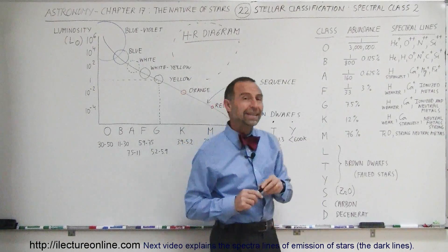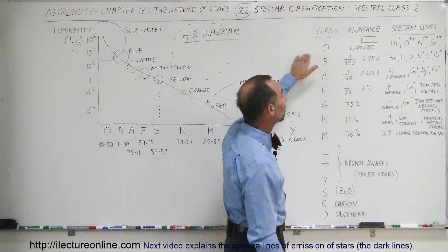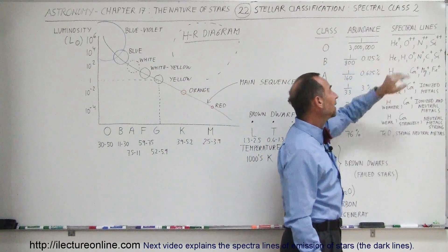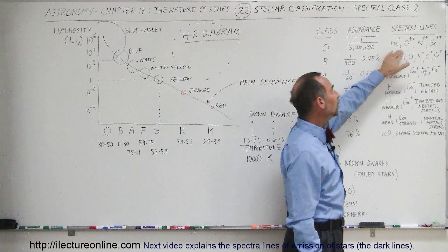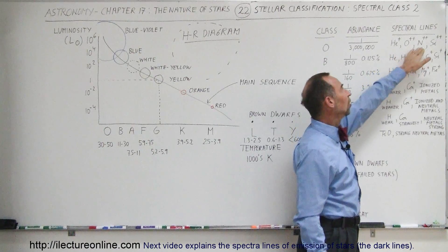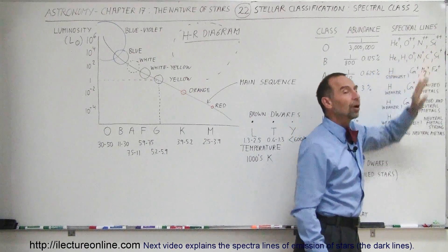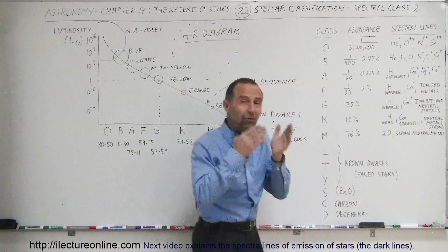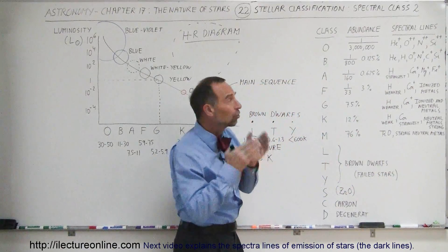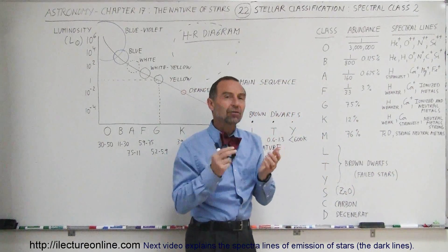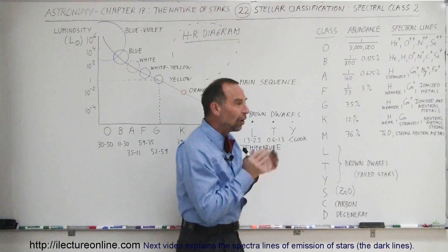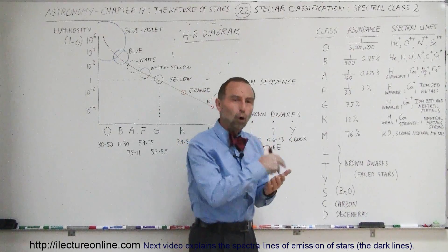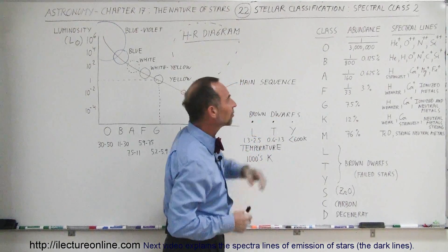We can tell a star is O-class because its spectrum shows ionized helium, doubly ionized oxygen, doubly ionized nitrogen, and doubly ionized silicon. When we find those spectral lines associated with those ions, we can say that star must be an O-class star. That's how we recognize them.